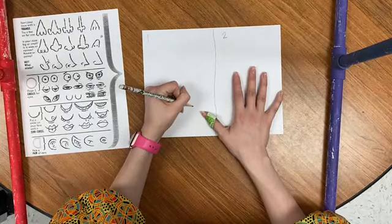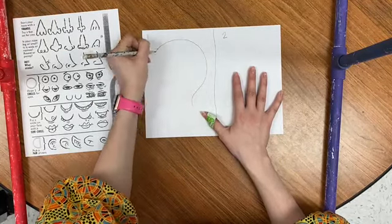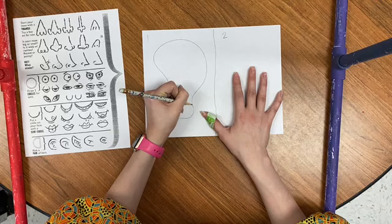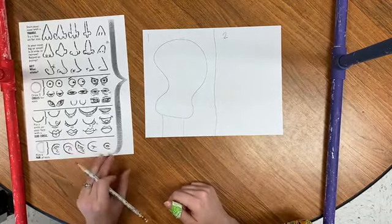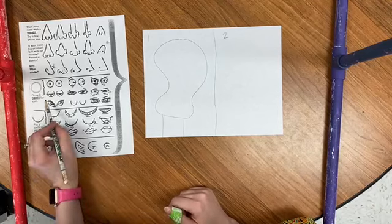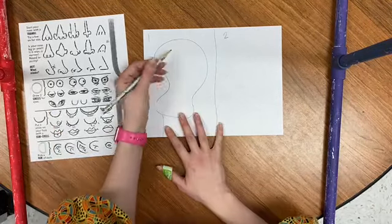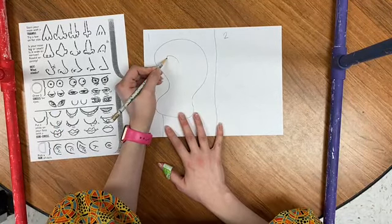First, you want to start with your head shape. Your drawing can be a little silly. Make sure you have a neck. And then I can start looking at my eyes. I'm going to do these eyes and I can put them anywhere on my face.